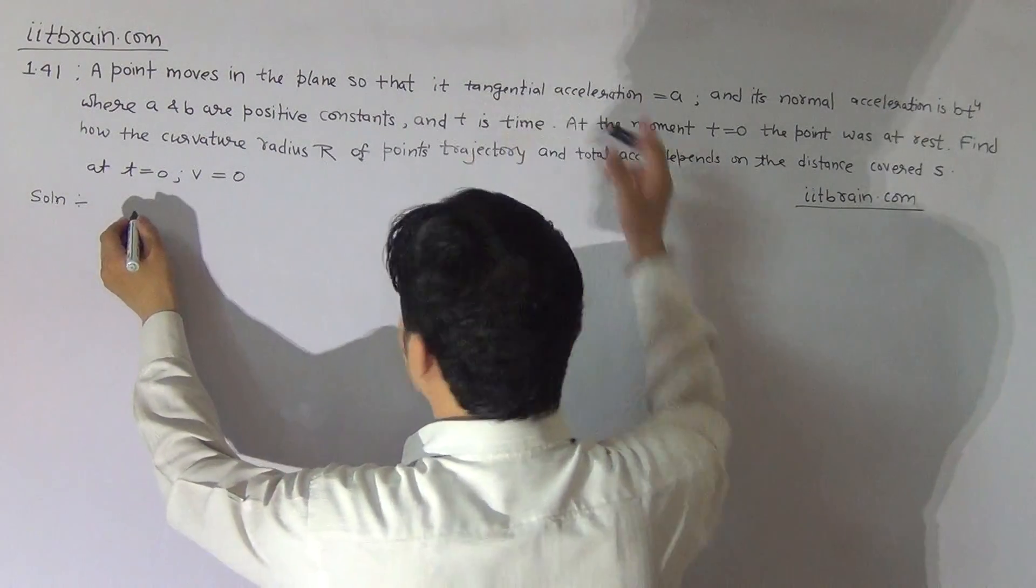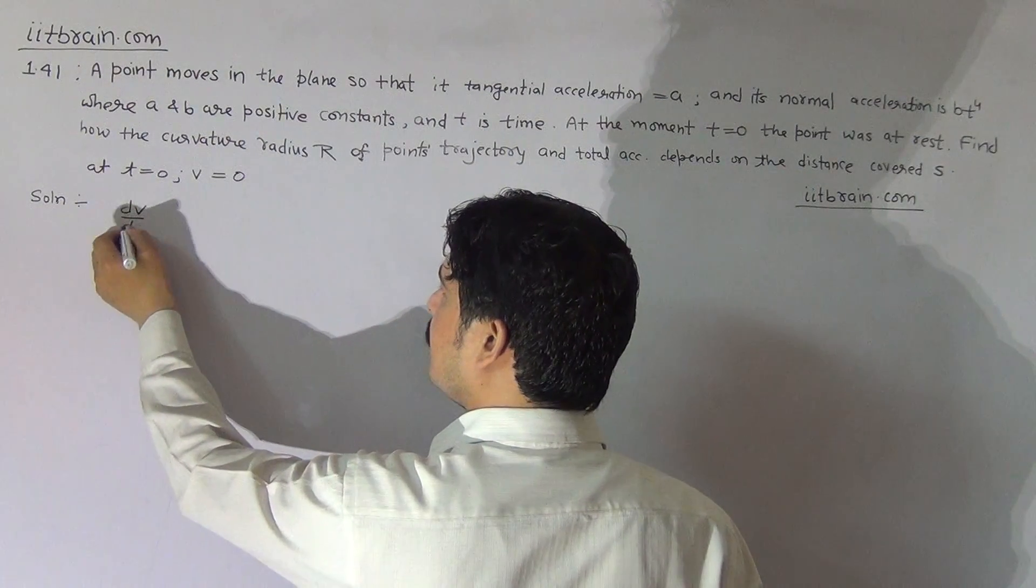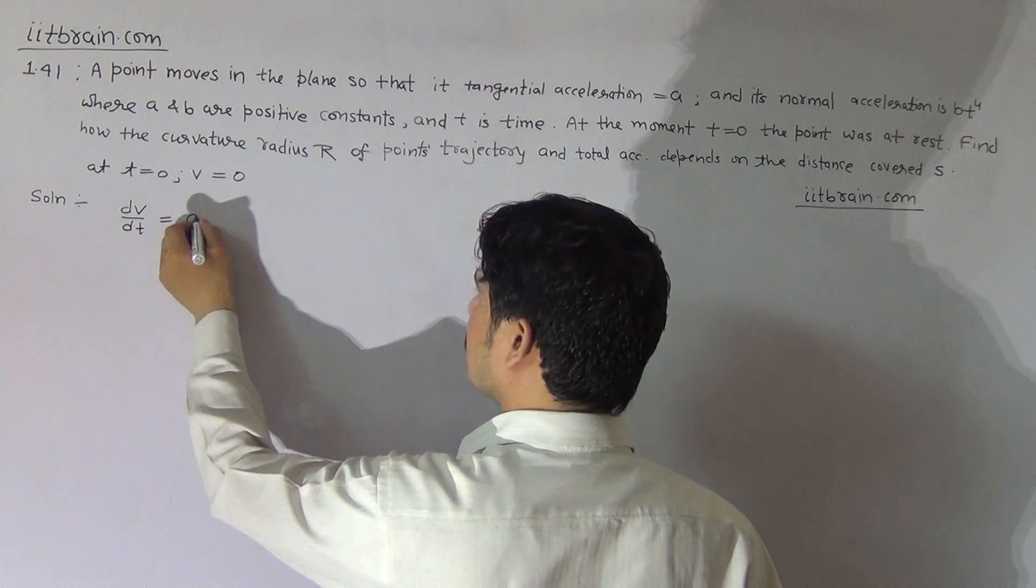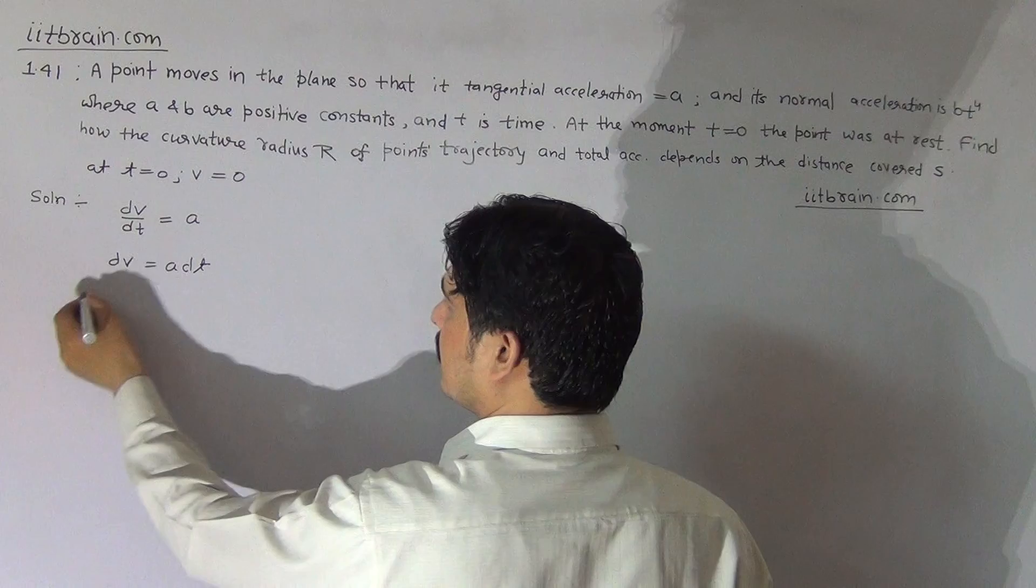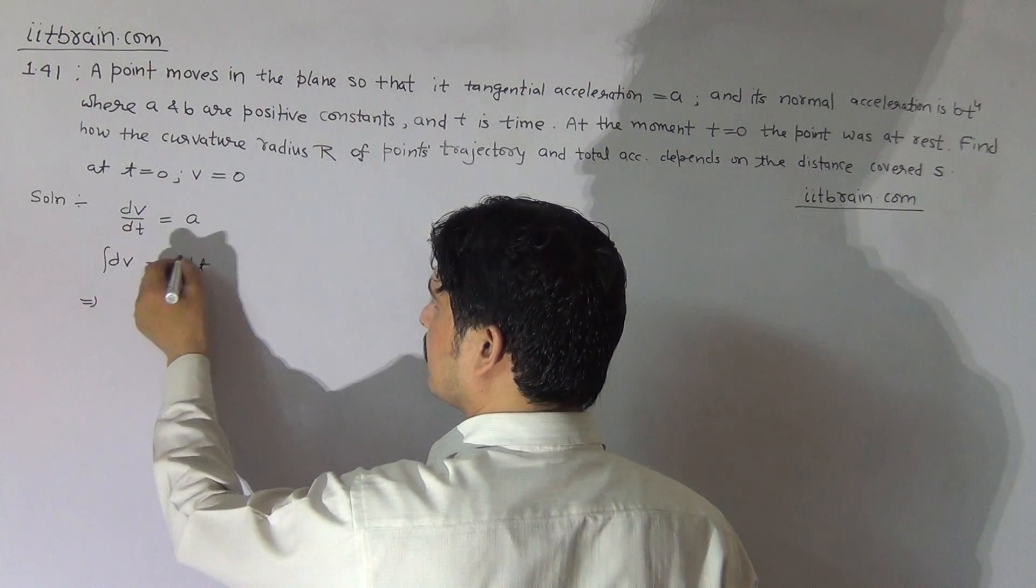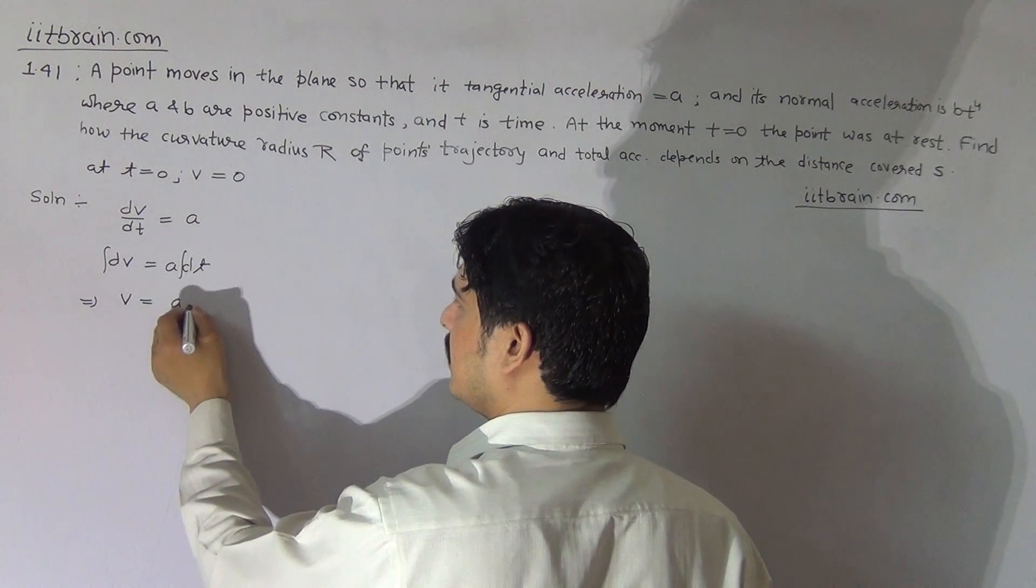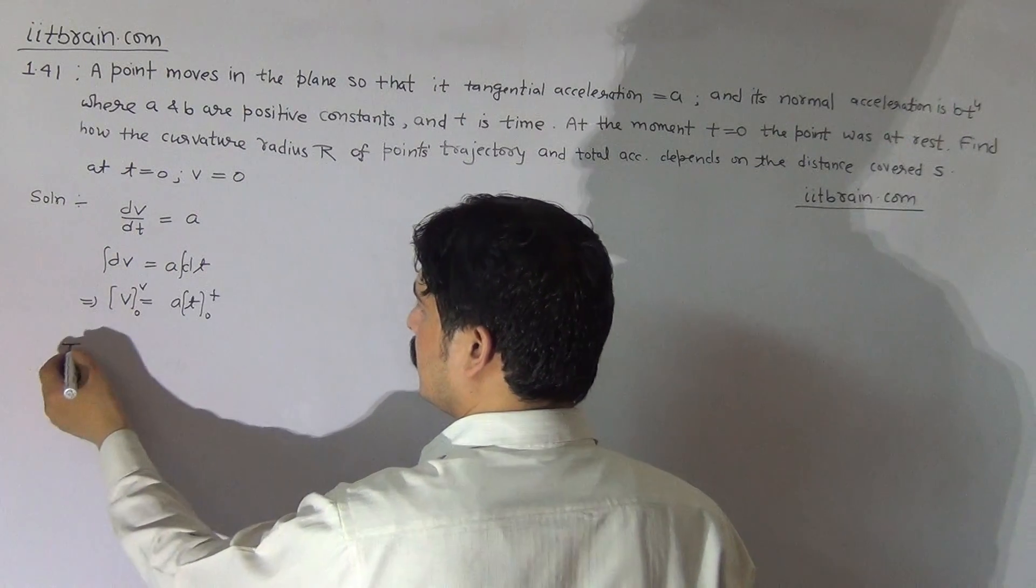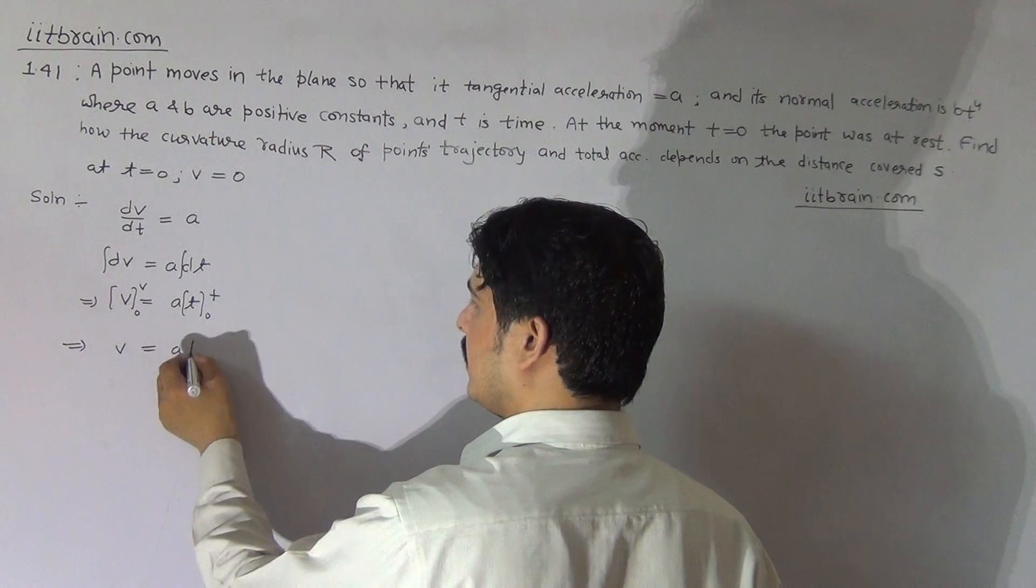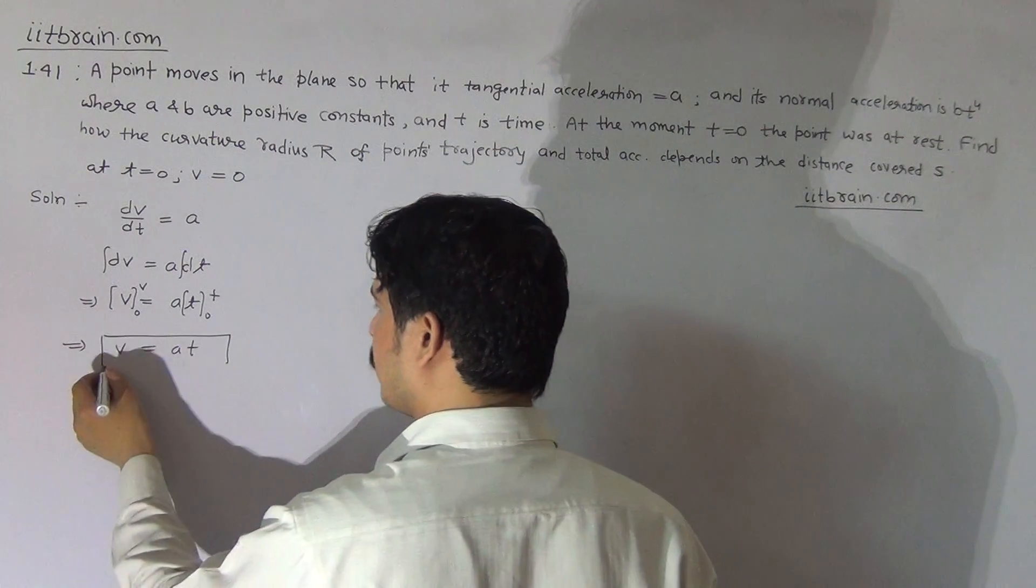We start according to given condition. Tangential acceleration, that is dV by dt, rate of change of speed, is A. So dV equal to A dt. On integrating this expression from 0 to V and time from 0 to t, you will get V equal to At. This is the relation between velocity and time.